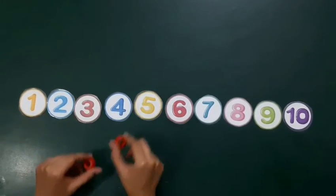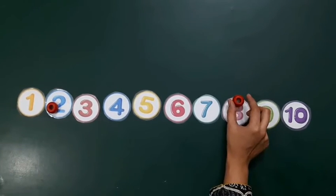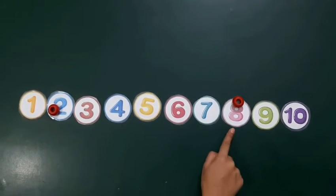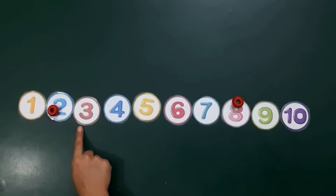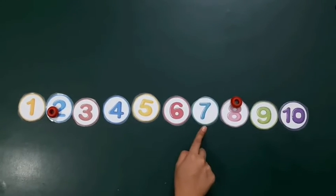Next you can see numbers 2 and 8. Which numbers are between 2 and 8? 3, 4, 5, 6, 7.